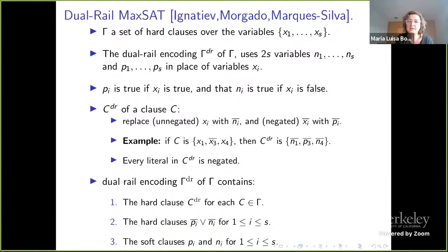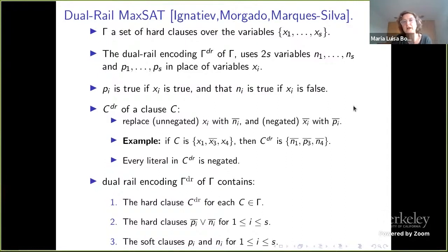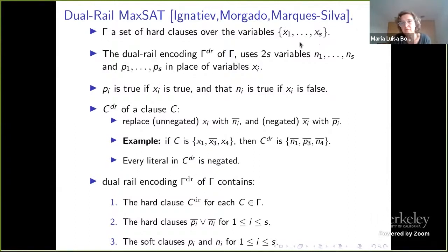Partial MaxSAT is the problem of finding an assignment that satisfies all the hard clauses and minimizes the number of falsified soft clauses. The dual rail encoding starts with a formula with variables x1 to xs. We encode it with a different set of variables: n1 to ns and p1 to ps.